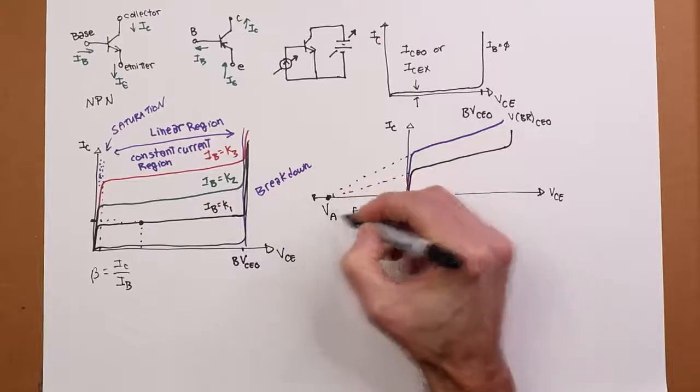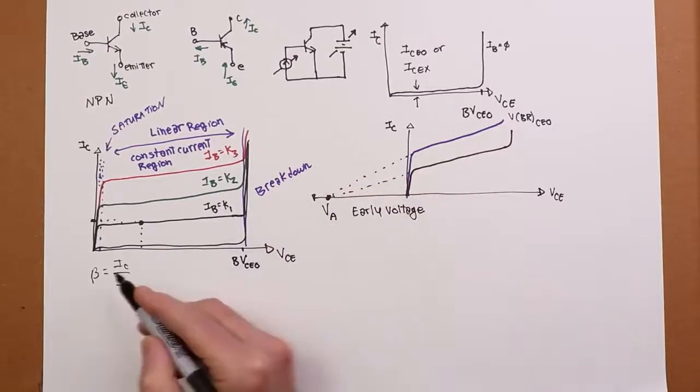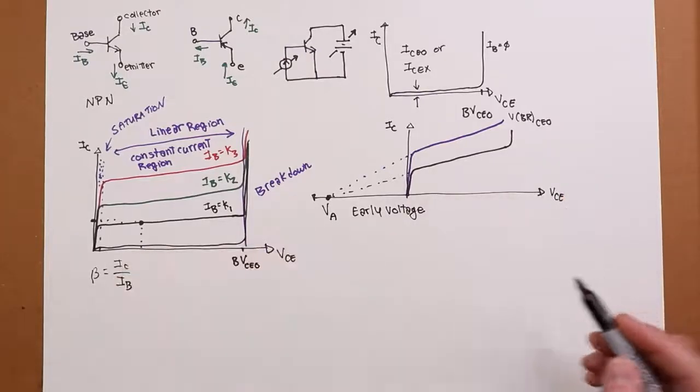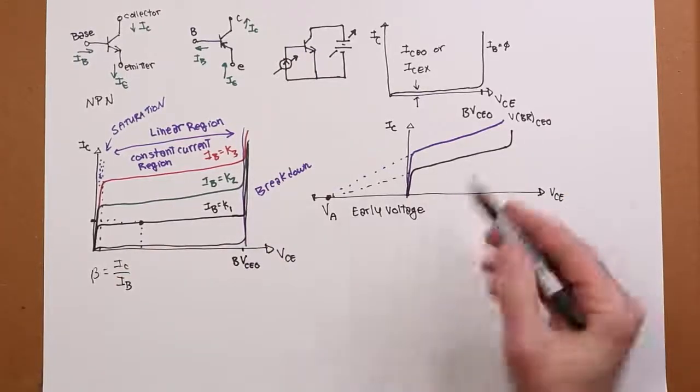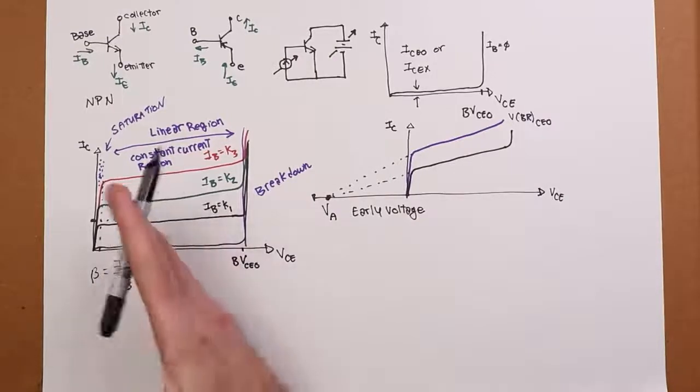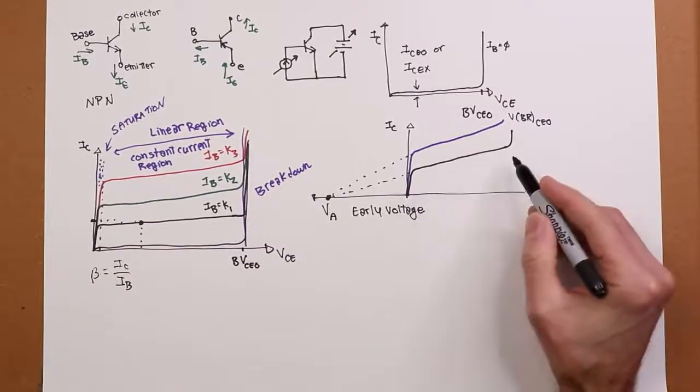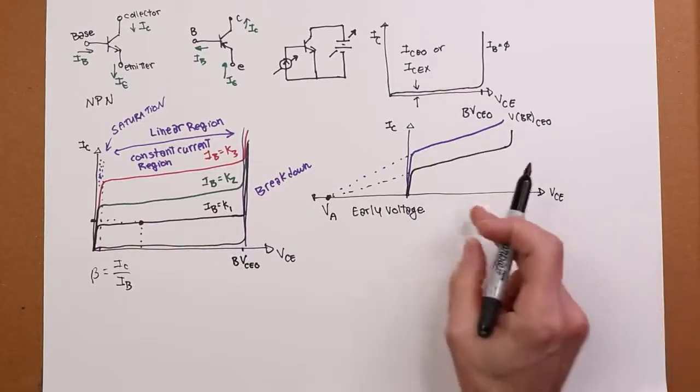It's named after James Early. And basically, the larger the early voltage is, the greater its magnitude, the flatter these curves. The less variation, the closer to horizontal they are. Ideally, you like that. You want something that's perfectly constant.